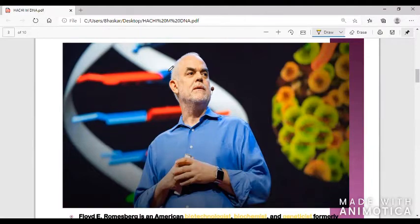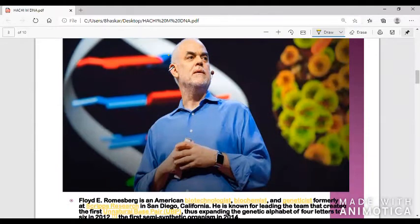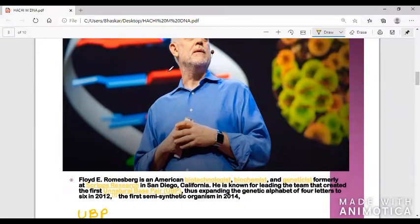One TED talk is given by the scientist Romsburg, an American biologist and biotechnologist. He first time in TED talk explained unnatural base pairs can be used to create synthetic organisms. He used six-letter DNA.